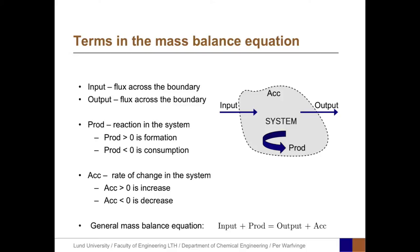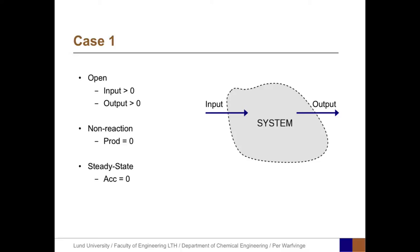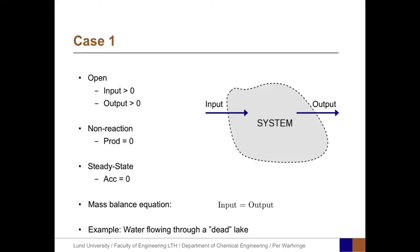This gives us the general mass balance equation, which states that the input plus the production equals the output plus the accumulation. Both the production term and the accumulation term may be positive or negative. In the first example, let us take a look at an open system where we have an input greater than zero and an output greater than zero. If we don't have any reaction, the production is zero, and at steady state the accumulation is also zero. In that case, the mass balance equation reduces to: input equals output.